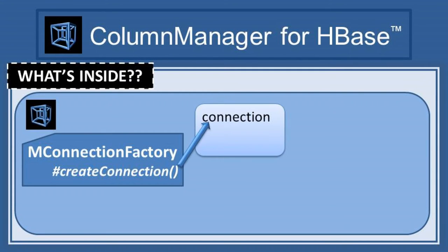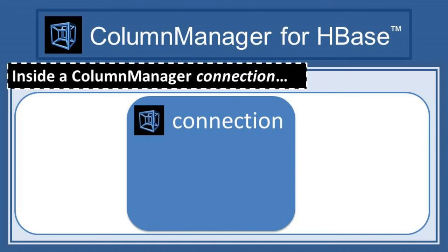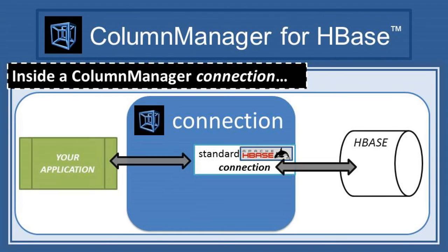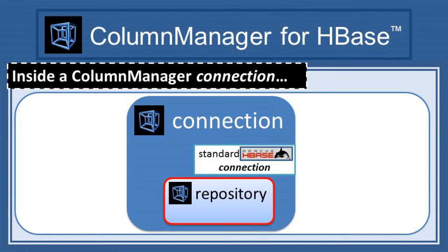But what's really going on inside of a connection object that you get from mConnectionFactory? And what's going on inside of the admin and table objects that this connection in turn provides you with? The special connection object that you get from mConnectionFactory is just a thin wrapper around the standard HBase connection that you would get from a standard connection factory. This special connection faithfully passes everything through to the standard connection it contains, so you don't lose any standard functionality. But the special connection also contains a private instance of Column Manager's repository class.